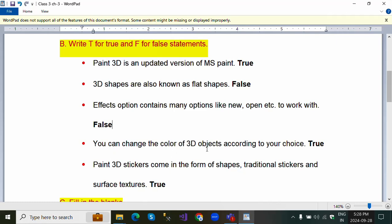You can change the color of 3D objects according to your choice - absolutely this is true. Paint 3D stickers come in the form of shapes, traditional stickers and surface textures - yes, this is true.